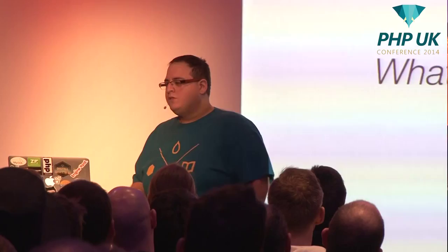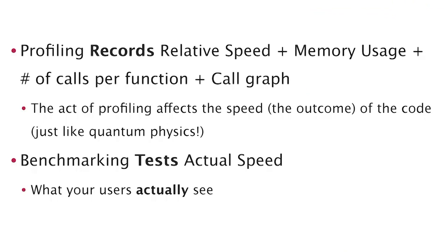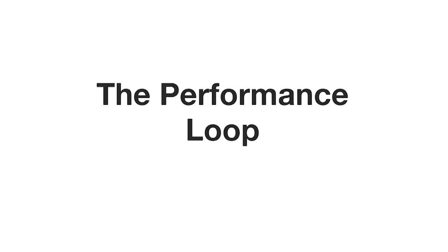Originally this talk was called PHP Performance Under the Hood, and I retitled it after Benelux because there's not much performance stuff in it. I want to talk about profiling. What is profiling, and what's the difference between benchmarking and profiling? Profiling is measuring the relative speed of different portions of your application, not the actual speed. Benchmarking is testing actual speed, because profiling modifies the speed of your application. Profiling tries to identify bottlenecks, but you can't tell if you fixed a problem with profiling — you have to benchmark again.